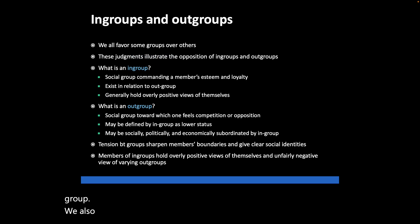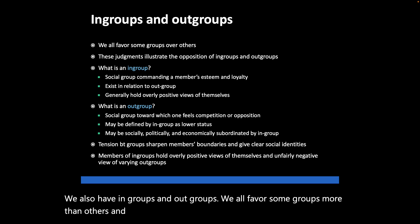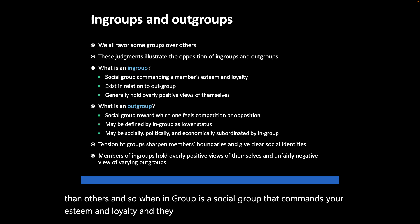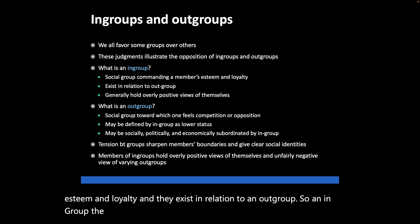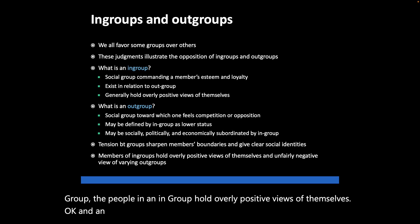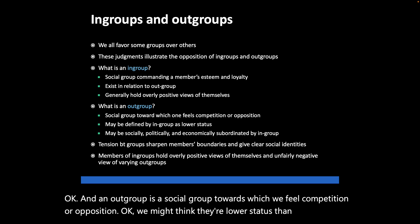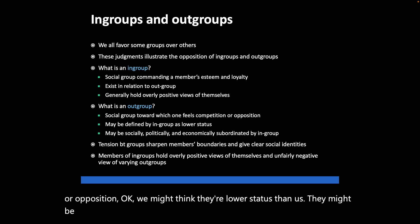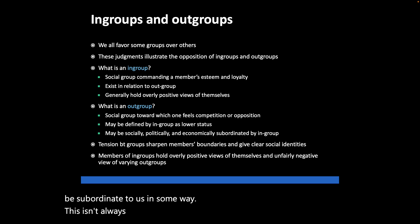We also have in-groups and out-groups. An in-group is a social group that commands your esteem and loyalty, and it exists in relation to an out-group. People in an in-group hold overly positive views of themselves. An out-group is a social group toward which we feel competition or opposition — we might see them as lower status or subordinate in some way. Being a member of an in-group sharpens our boundaries and gives us clear social identities.